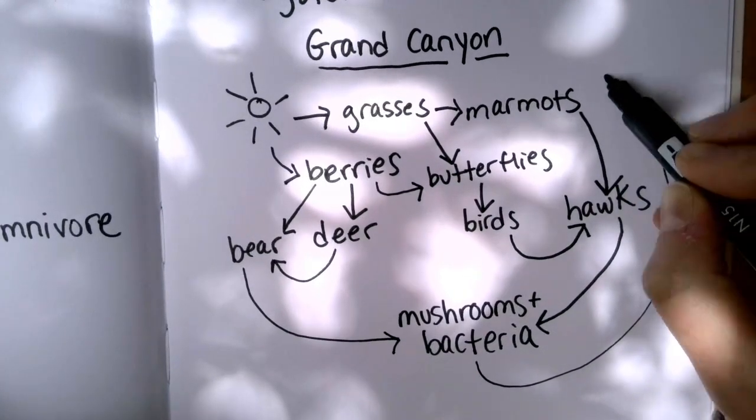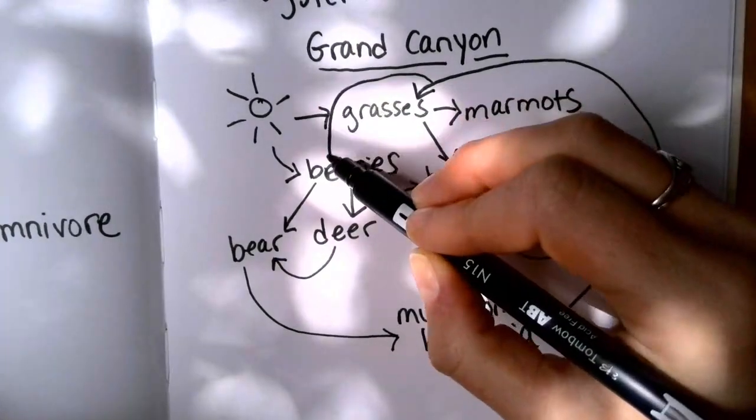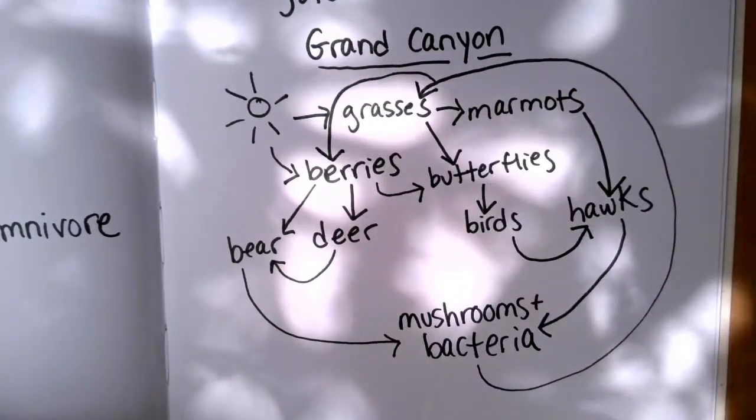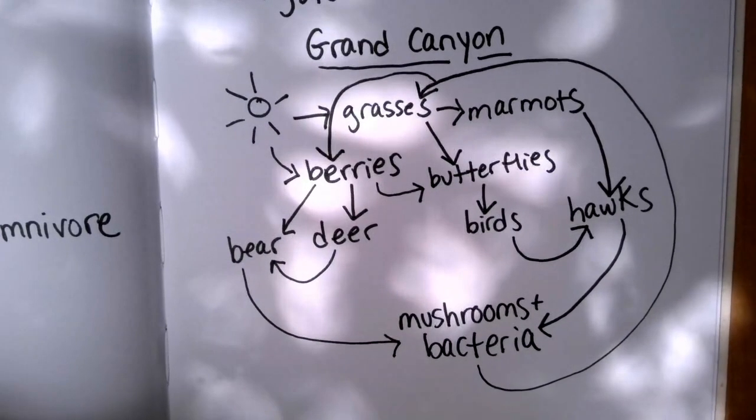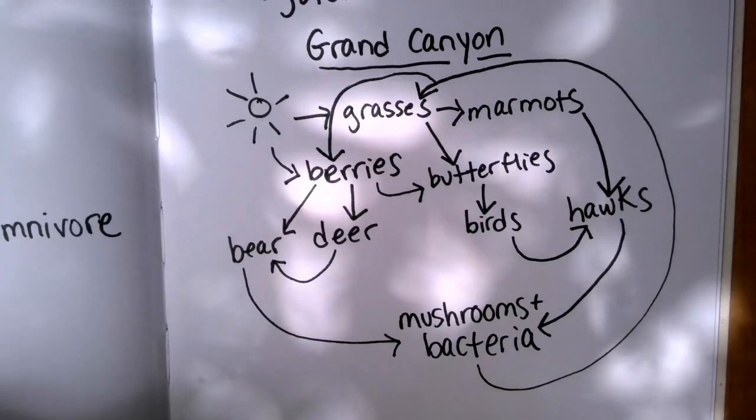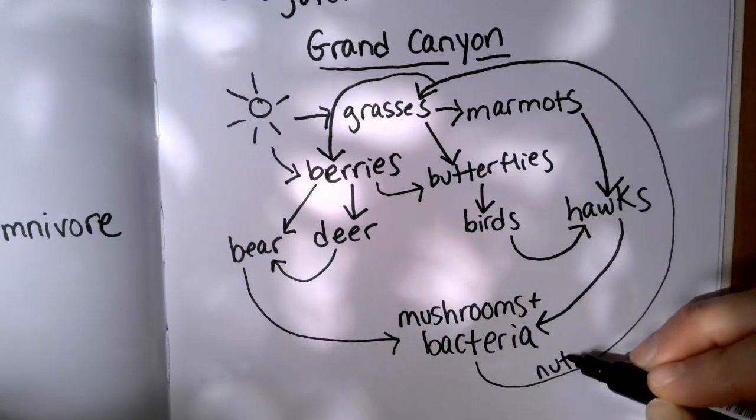As you probably noticed, this makes things look a little more complicated. And that's why I didn't put it in at first. But it is an option if you want to draw in that this is where the nutrients are going. All right, that's our completed food web.